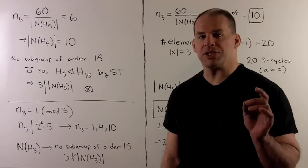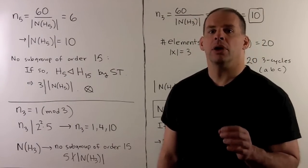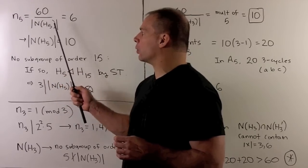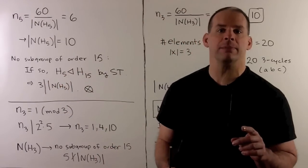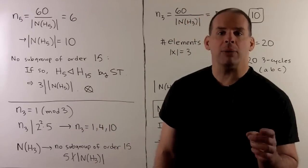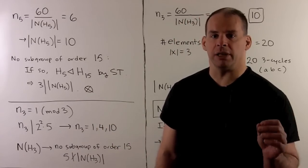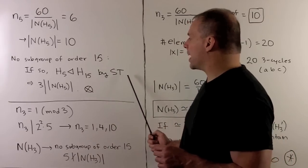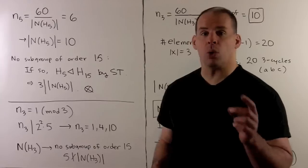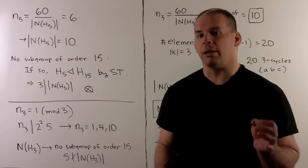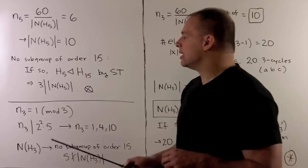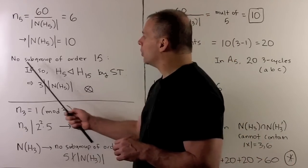The number of Sylow 5-subgroups equals the order of the group divided by the order of the normalizer of any Sylow 5, so that normalizer has order 10. With that, we see there is no subgroup of order 15. If there were, Sylow theory says the Sylow 5 inside it would be unique and hence normal, meaning an element of order 3 would normalize our Sylow 5. Since 3 doesn't divide 10, this can't happen.